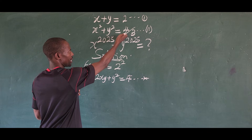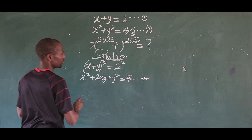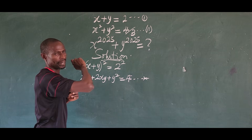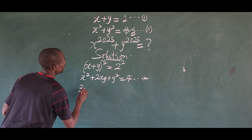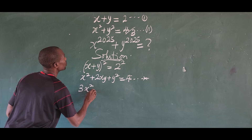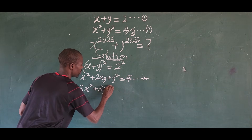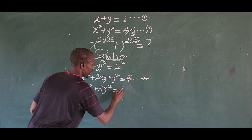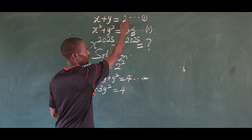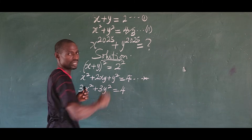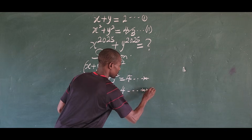Now let's create another equation from equation 2. From equation 2, I want to multiply both sides by 3 to clear the denominator. This gives us 3x squared plus 3y squared equals 4. Let's call this equation star-star.